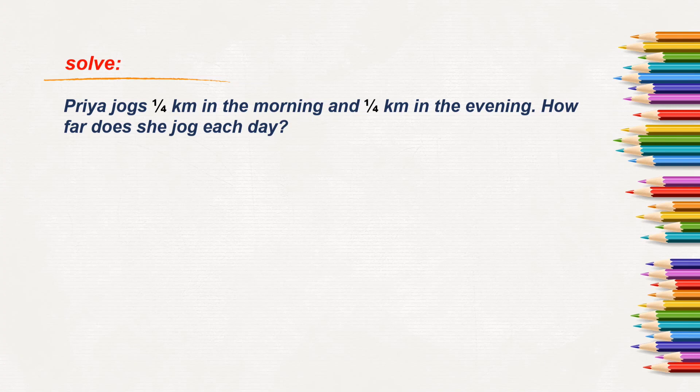We will have to find out how far she jogs each day. So when we add two distances together, that is 1 by 4 and 1 by 4. In the morning, 1 by 4 km. Also in evening, 1 by 4 km.